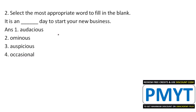Next question: 'It is a ___ day to start your new business.' Look at the options closely. 'Audacious' means full of audacity or bold. 'Ominous' means threatening. 'Auspicious' is the correct answer. 'Occasional' means kabhi kabhar — not appropriate here.